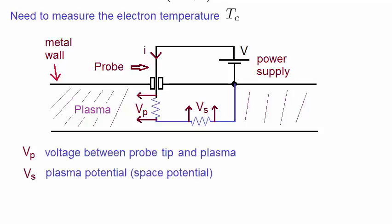Vp is the voltage between the probe tip and the plasma. Vs is the voltage between the plasma and the walls of the chamber, known as the plasma potential, or sometimes called space potential. Note that this forms a complete circuit.